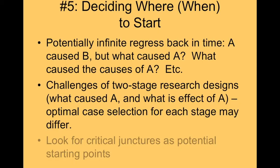It's not impossible to do a two-stage design, but be aware that's what you're doing. Be clear to your readers when you're switching between stages, what the case selection is for each, what the theories are, and what the independent variables are — because in the second stage, the dependent variable from the first stage is now an independent variable. Look for critical junctures as starting points, and be aware of potential critical junctures that could have changed events but didn't.